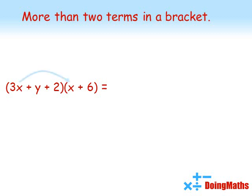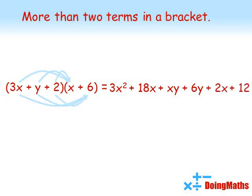So again we're going to multiply everything in that first bracket by everything in the second bracket. 3X times X is 3X squared. 3X times 6 is 18X. Y times X is XY and Y times 6 is 6Y. Finally 2 times X is 2X and 2 times by the 6 gives us 12.